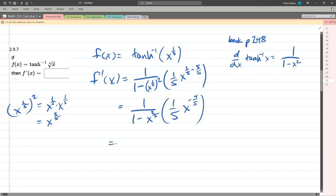All right. You can rewrite this. You can put the 1/5th in front. 1 minus x to the 2/5ths. 1 over x to the positive 4/5ths because I reciprocated it.